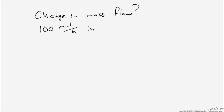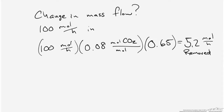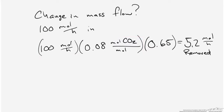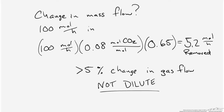We know we have 100 moles per hour of gas coming into the system total. From that 100 moles per hour we're removing 65% of the total amount of CO2. We calculate the amount of CO2 removed by multiplying the 100 moles per hour total by the fraction that is CO2, which is the 0.08 specification, giving us 5.2 moles per hour of CO2 removed. When we compare that to 100 moles per hour total coming in, we see we have over a 5% change in gas flow rate, so we would consider that a relatively large change. As we move forward we're not going to assume it's a dilute system.